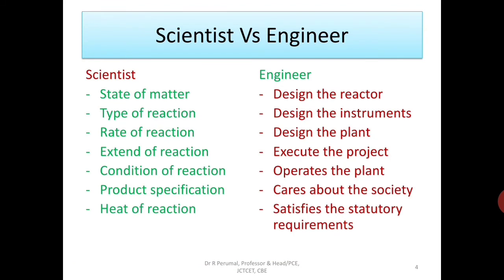Next, scientist versus engineer — who is the scientist and who is an engineer? What is the difference between them? A scientist can decide the state of matter — whether the reactant is in solid, liquid, or gaseous state. A scientist can decide the type of reaction — whether it is a decomposition reaction, synthesis reaction, or combustion reaction. A scientist can also decide the rate of reaction — how fast the reaction will occur, how to expedite or slow down the rate of reaction.